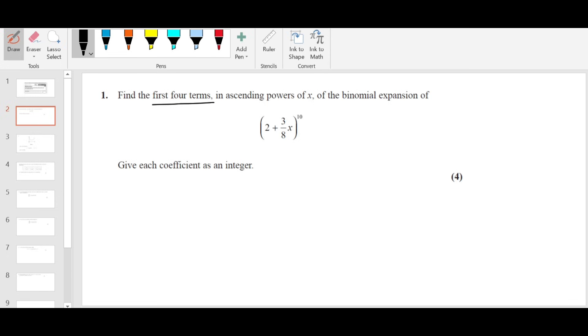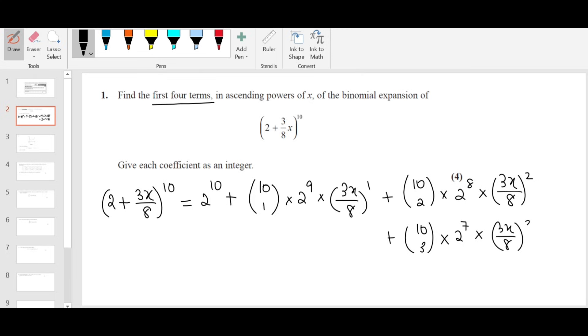They want us to find the first 4 terms of this binomial expansion: (2 plus 3x over 8) to the power 10. So the first term is 2 power 10. Then the second term is 10c1 times 2 power 9 times 3x over 8 power 1 plus 10c2 times 2 power 8 times 3x over 8 power 2 plus 10c3 times 2 power 7 times 3x over 8 power 3. We got the 4 terms already. Now we need to simplify.